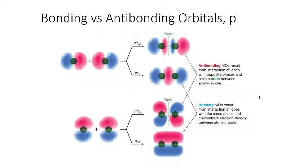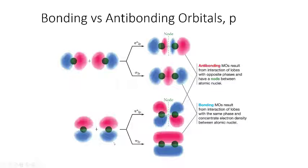Looking at bonding versus anti-bonding orbitals for p-orbitals: pi orbitals are caused by overlap of the two lobes above and below the nuclei. They can either add constructively to form the pi bonding orbital we know, or if we add together opposite phases, we form a pi-star anti-bonding orbital that has a node in between the two. These are orbitals that are unable to undergo a bond, whereas bonding orbitals have electron density in between the two atoms.